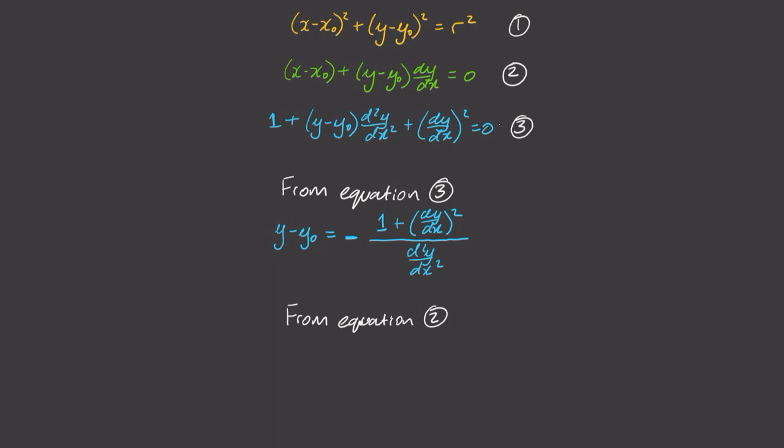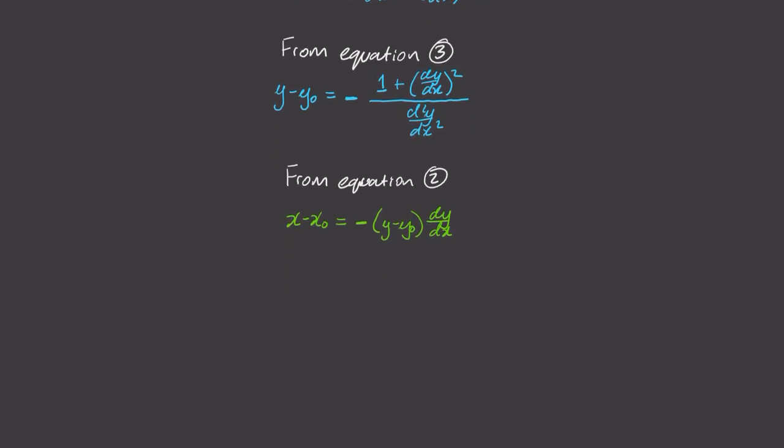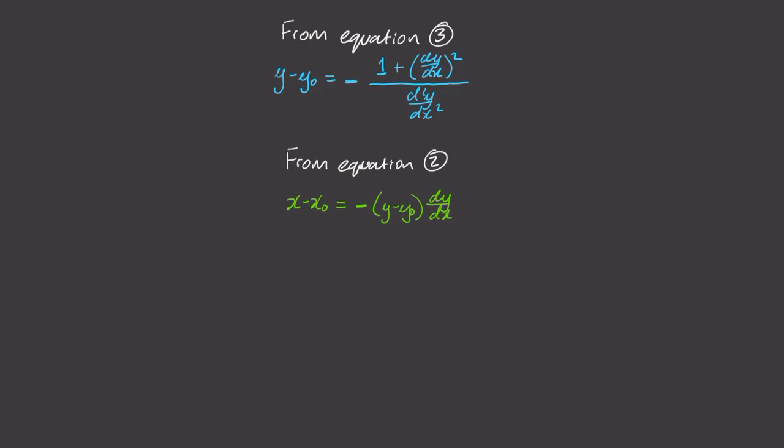Now from equation 2, we can solve for x - x₀ by bringing the other terms to the right-hand side as well. But notice, this now has a y - y₀ term in it. Let's substitute that out to get this expression here.